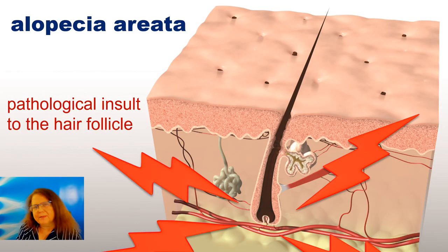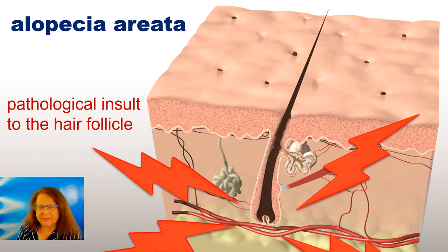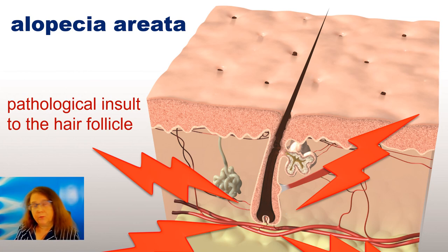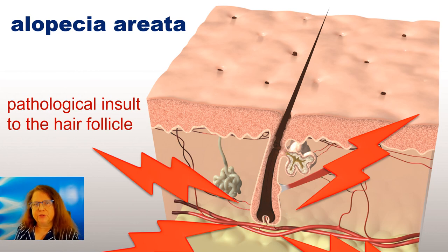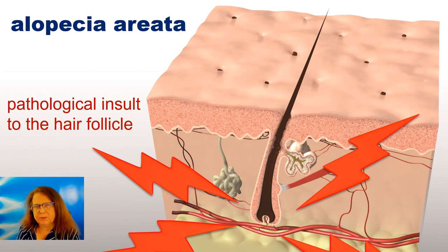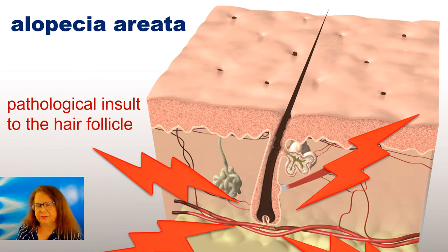There are many ways of learning trichoscopy — either by memorizing the images, or a way which I prefer: by understanding trichoscopy. Today I will use the example of alopecia areata to show how easy trichoscopy is to understand when we know the basic mechanism behind every hair disorder.